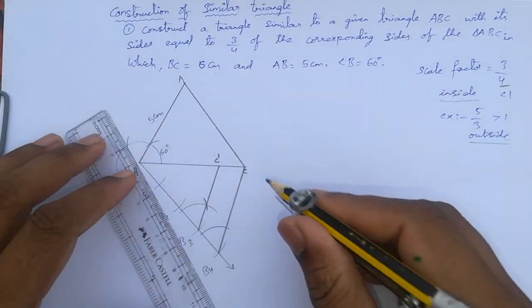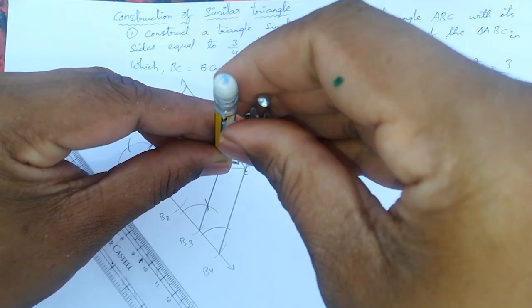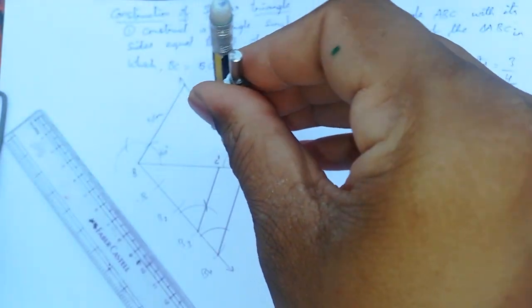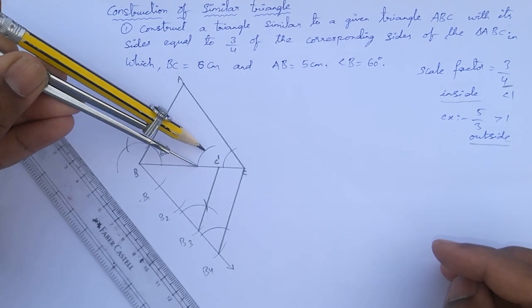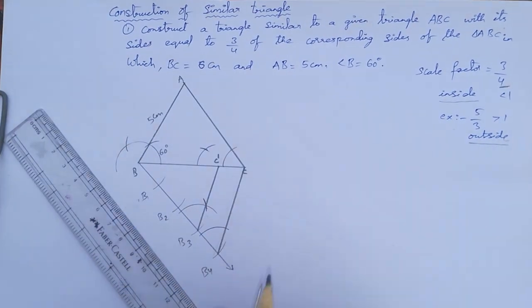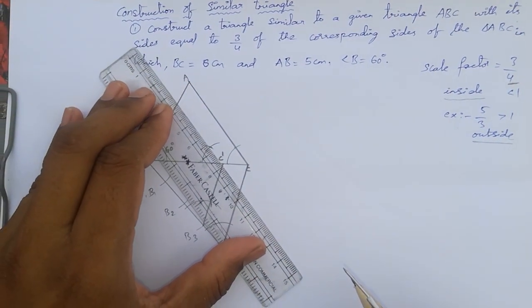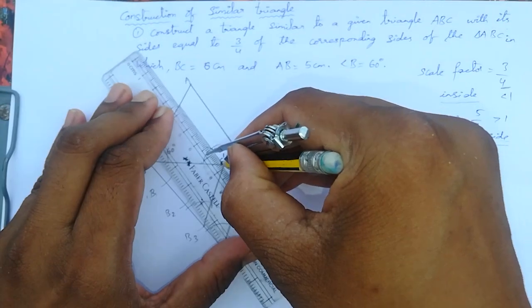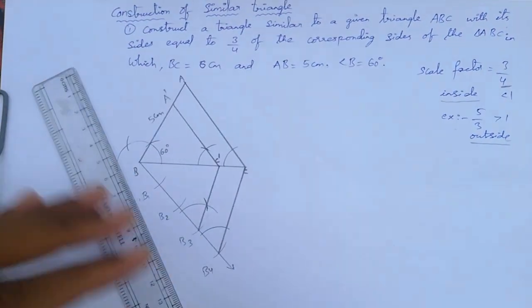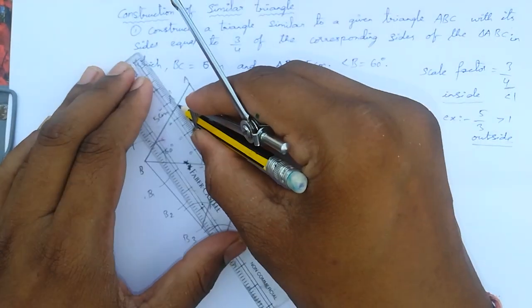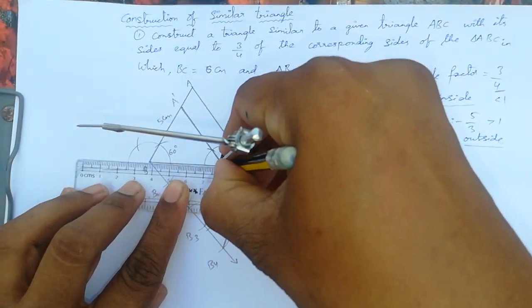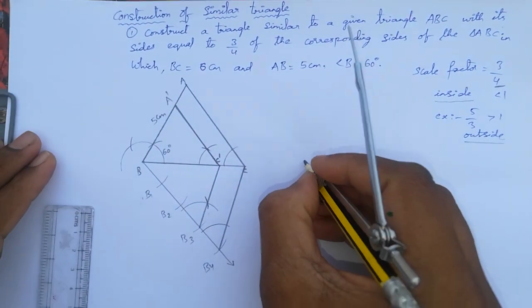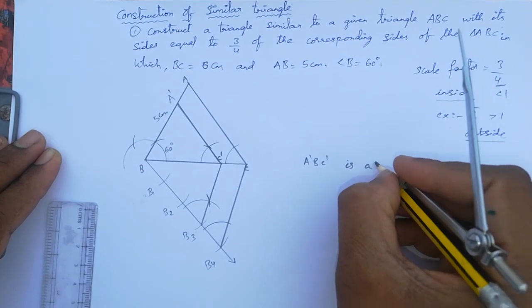From C, draw an arc; from C dash, draw the same arc without disturbing. Measure the length and cut the same length from C dash to get the intersection. Extend from C dash to this intersection up to AB, which gives A dash. So the required similar triangle is A dash B C dash.